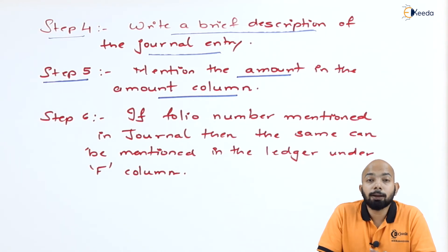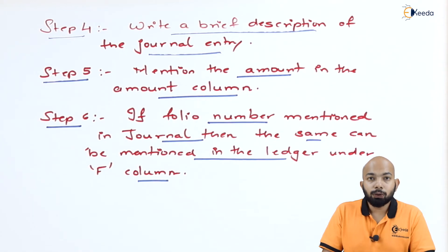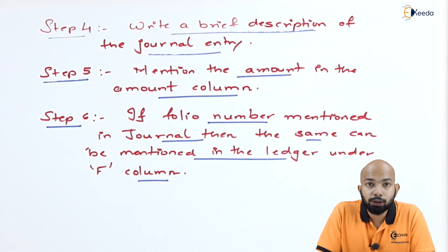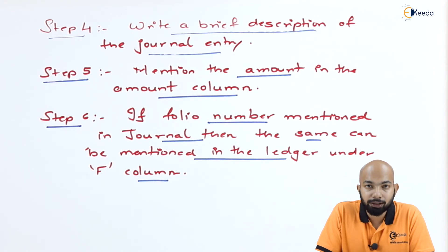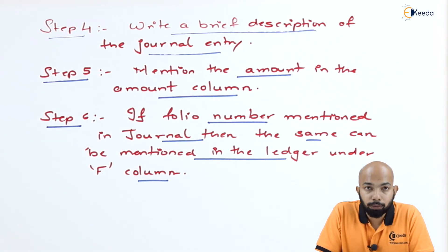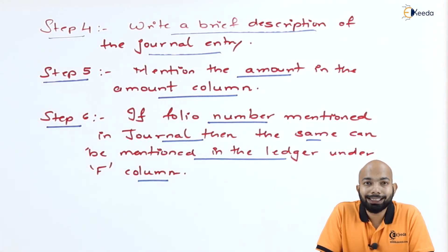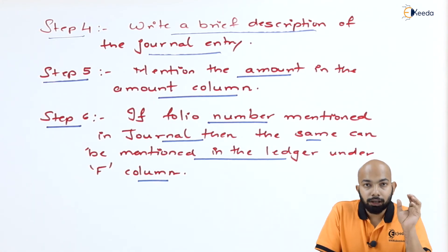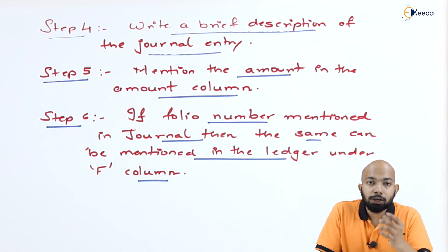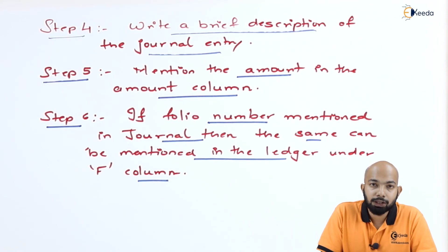The last step involves the journal folio, which is the page number from which the journal transaction has been taken into consideration. If the folio number is mentioned in the question, you can write it under the JF or F column in the ledger. So the complete sequence is: first the date, second the explanation, third the amount, and the journal folio — all mentioned in line with every specific transaction.